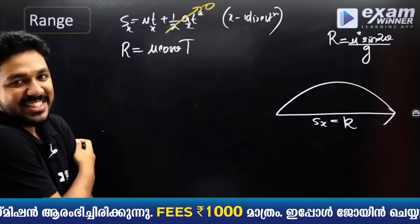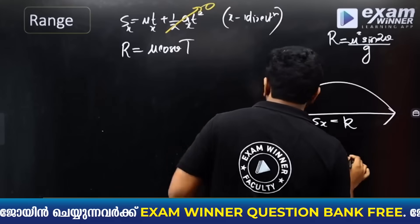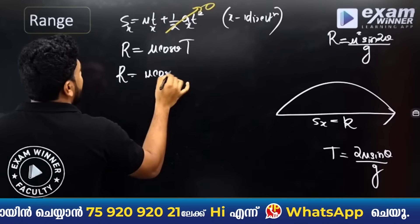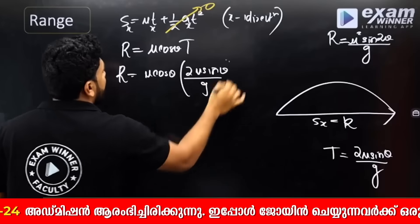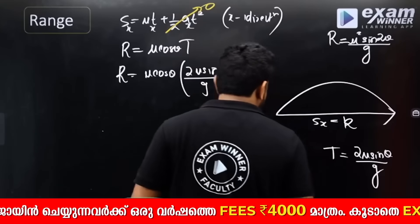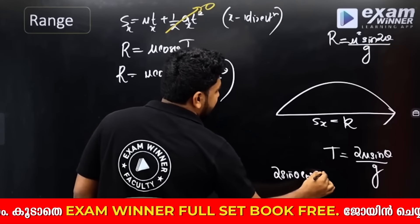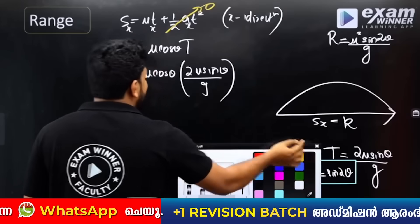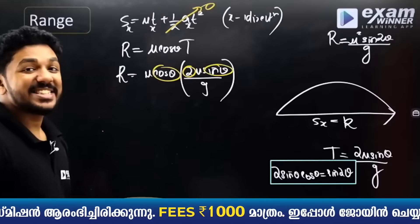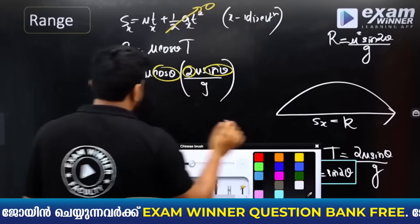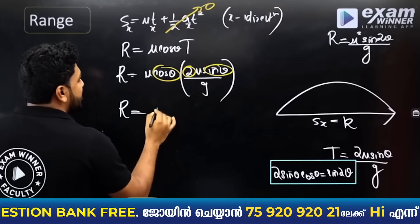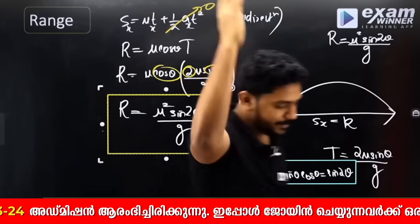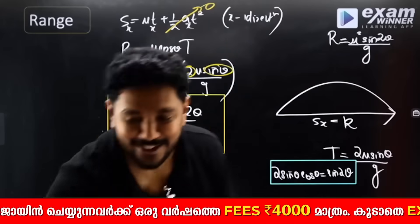The x-direction acceleration is zero, so sx = ux·T, which means R = u cosθ · (2u sinθ/g). Using the trigonometric identity 2 sinθ cosθ = sin 2θ, we replace and get R = u² sin2θ by g. That is the third derivation — pen drop!